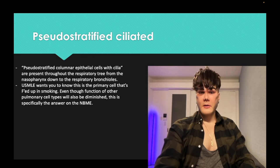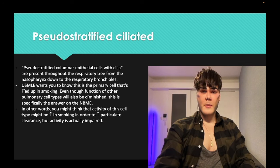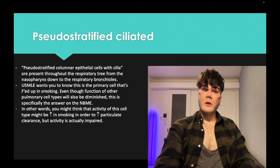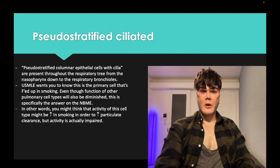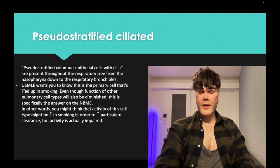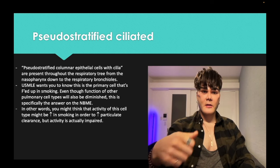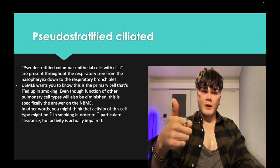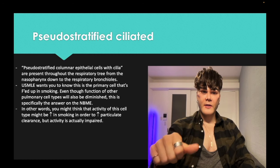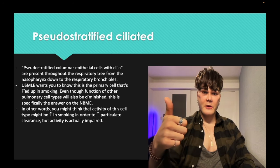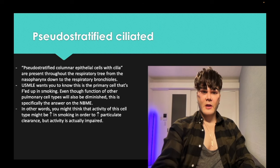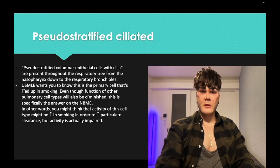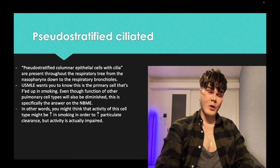USMLE wants you to know that ciliated cells are the ones most damaged in smoking. If you get a question asking about alveolar macrophage activity and pseudostratified ciliated cell activity in a smoker, it's a down arrow for both — even though you'd think we'd want increased activity for clearance. If forced to choose which cell is most affected, it's the pseudostratified ciliated cell over the alveolar macrophage.